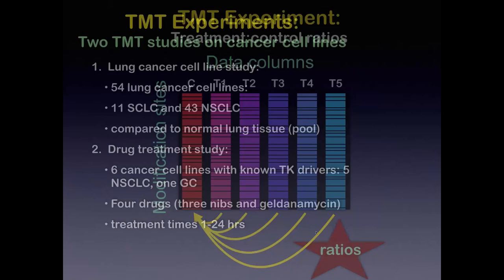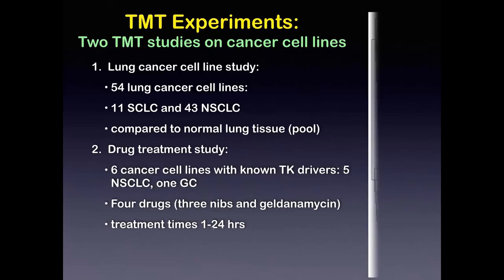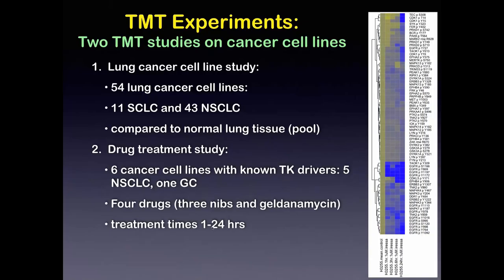The data are 54 lung cancer cell lines, including small cell, which is derived from the neural crest, and non-small cell, derived from epithelial tissue, all compared to normal tissue. Six of the non-small cell cancer cell lines and one gastric carcinoma were treated with NIBS, three NIBS, and the drug geldenomycin, which inhibits heat shock 90 proteins. Clarissa did a time course experiment.